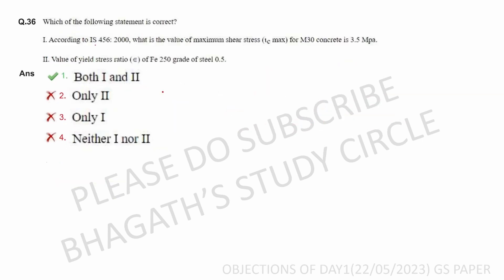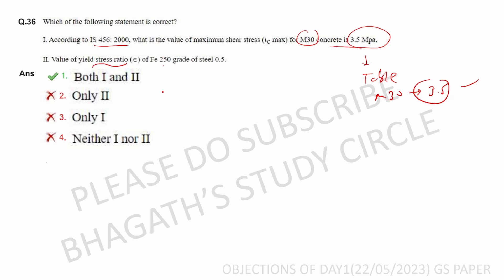Next question: According to IS 456-2000, what is the value of maximum shear stress for M30 concrete? The answer is 3.5. We have a table — the value is 3.5. This is correct.